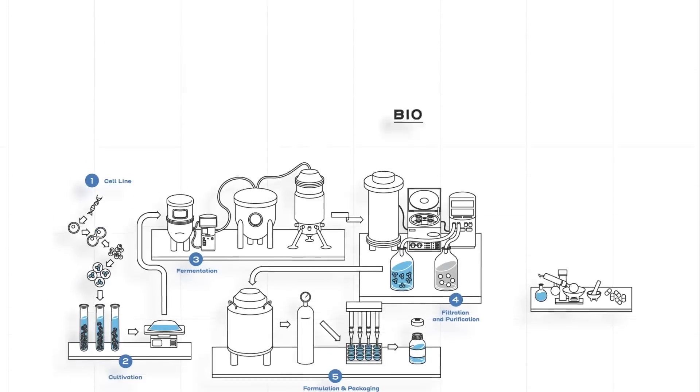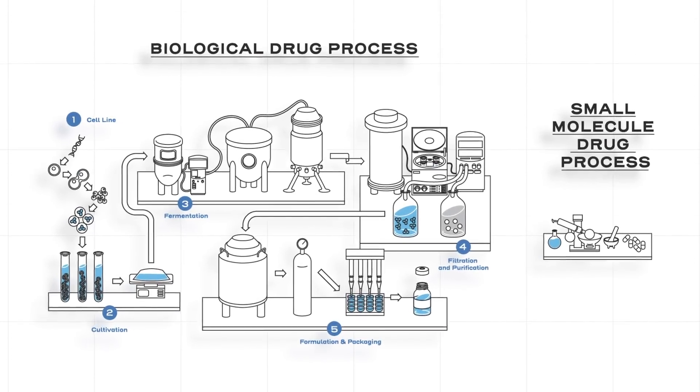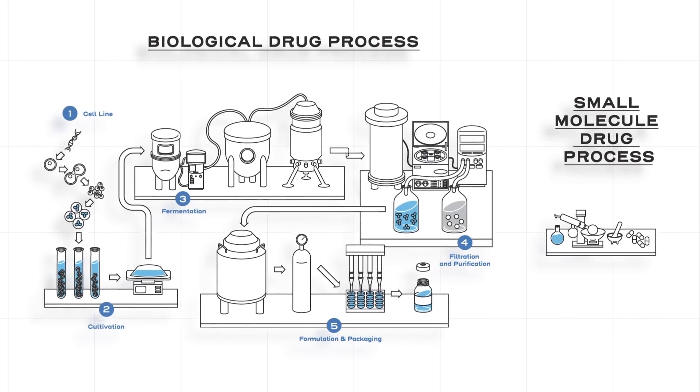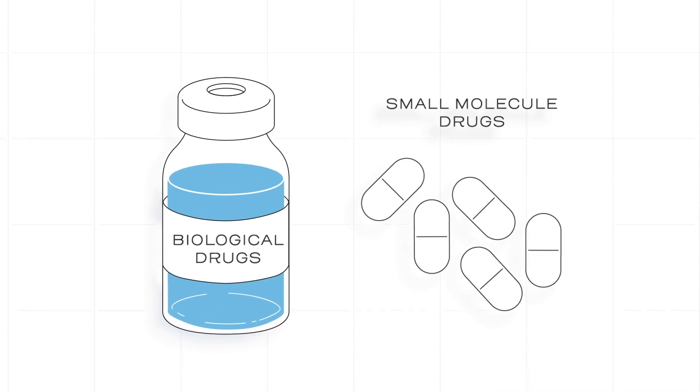Small molecule drugs are typically developed through chemical synthesis in an ordered process. The size, complexity, and inherent variability within the manufacturing process are why biological products are fundamentally different from small molecule drugs.